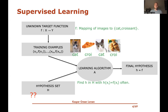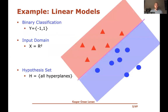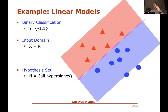What the hypothesis set is remains to be specified. One concrete example is the set of linear models — for binary classification in R², where blue circles are the +1 class and red triangles are the −1 class, the hypothesis set could be all hyperplanes: predict +1 on one side and −1 on the other. In Rᵈ generally, everything on one side is +1 and everything on the other is −1.